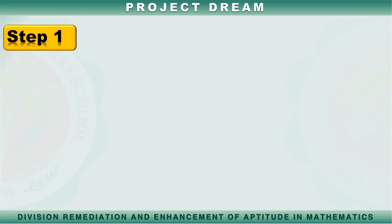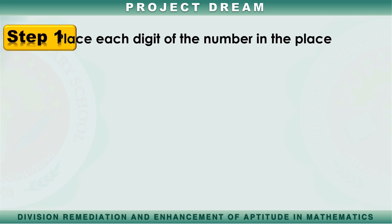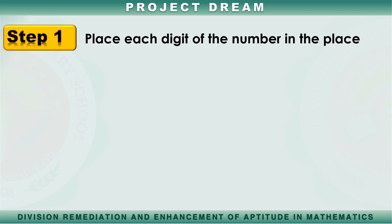To answer the example, let's do the following steps. Step 1: Place each digit of the number in a place value chart.